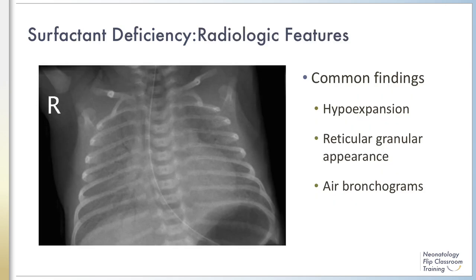Premature infants with surfactant deficiency exhibit symptoms of respiratory distress syndrome, or RDS. This condition was previously known as hyaline membrane disease because a membrane containing proteins and dead cells lines the alveoli, negatively impacting gas exchange. An uncomplicated course of RDS is often characterized by progressive worsening over 48 to 72 hours, with increasing FiO2 requirement and ventilatory support needs. Recovery usually coincides with diuresis after the initial period of oliguria. A typical chest X-ray shows a triad of findings: hypoexpansion, a homogeneous reticular granular pattern — often referred to as a ground-glass appearance — with superimposed air bronchograms.